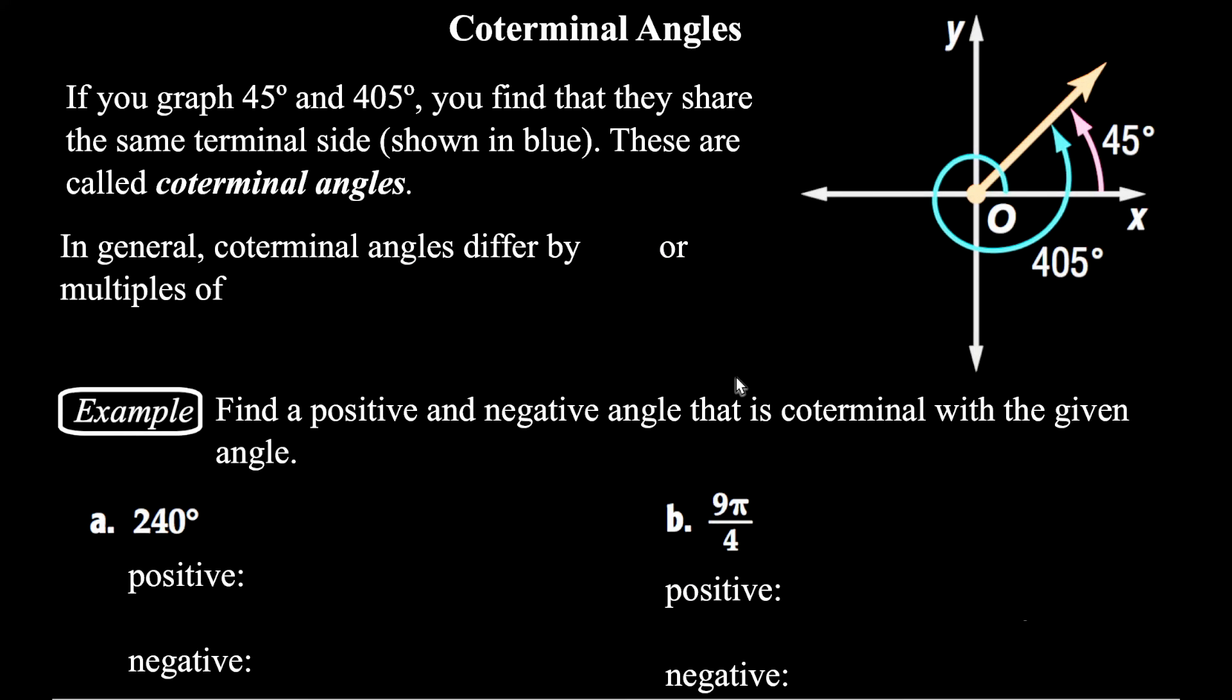Coterminal angles. So if you graph a 45 degree angle and a positive 405 degree angle, one of the things that you'll notice if you go around once and then another 45, they have the same terminal side. And we give those kinds of angles a special name. They're called coterminal angles because they share the same terminal side. So in general, if you are asked to find coterminal angles, you are going to add or subtract 360 degrees or multiples of 2π radians.